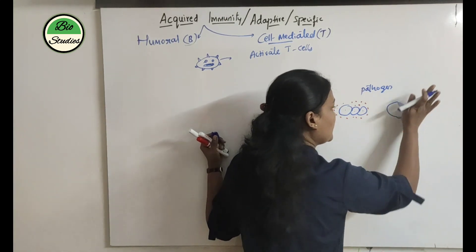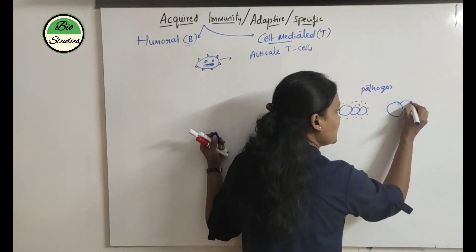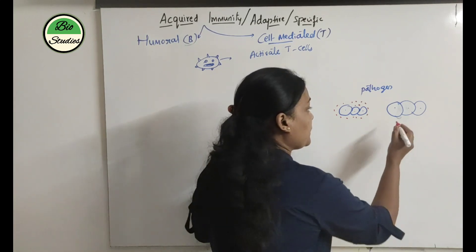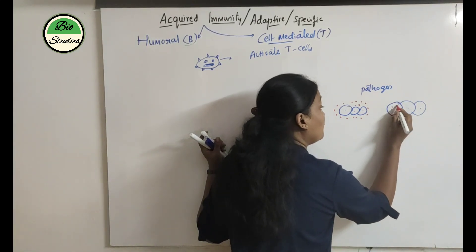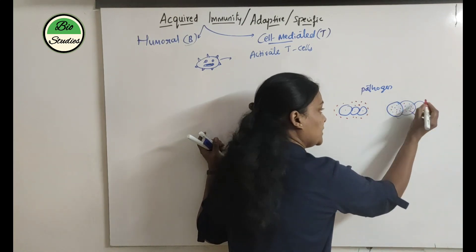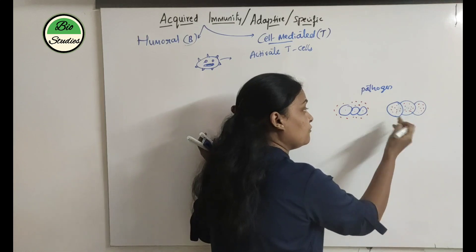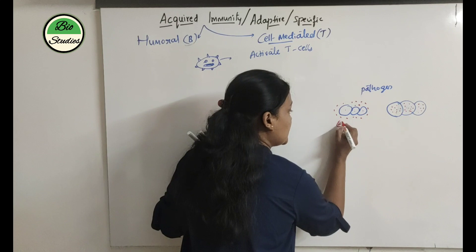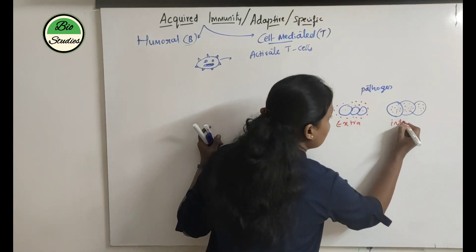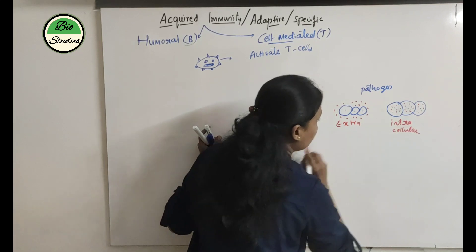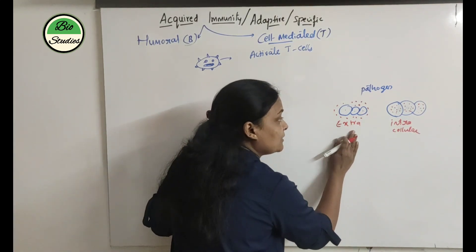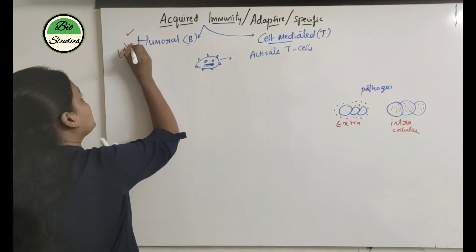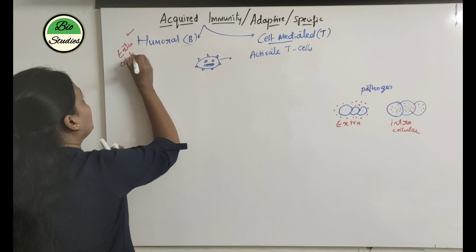Imagine this is a host cell. The pathogen will survive inside this cell. When you see the pathogens, the pathogens will survive here, then the pathogens will die. This is the extracellular pathogen — that means it is present in the blood and fluid. The cell will survive here.